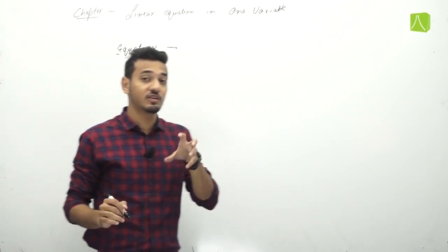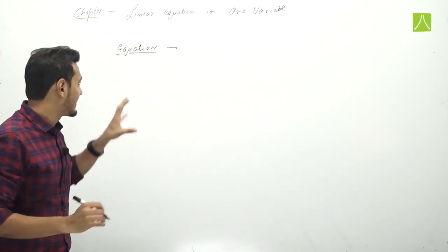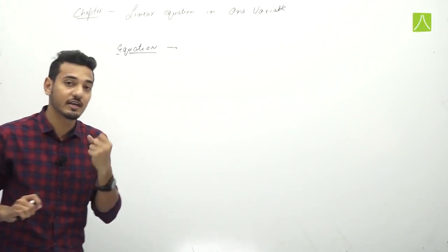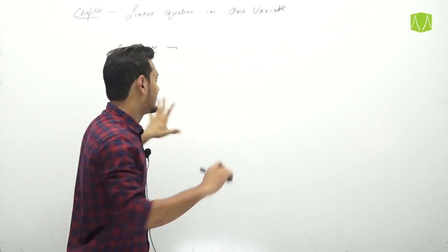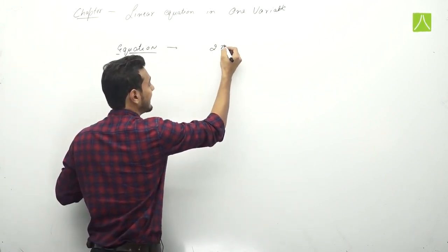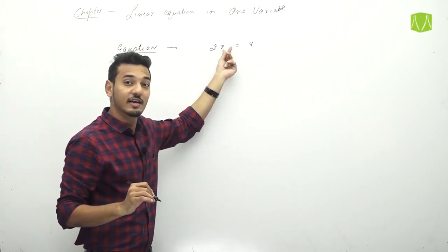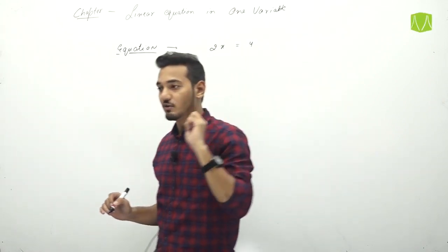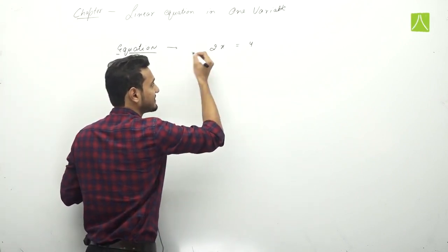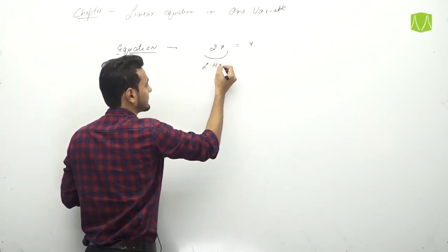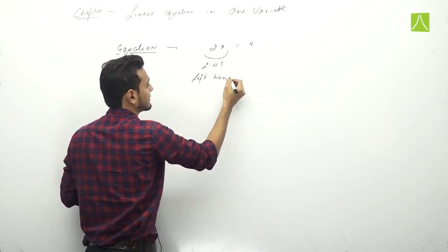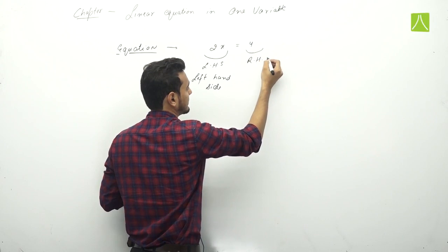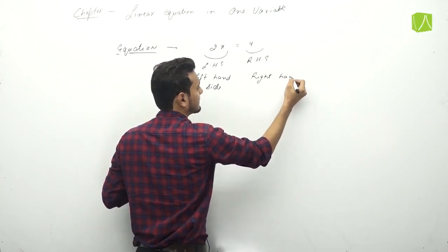What is an equation? An equation is one which has an equals sign. Like 2x equals to 4 — this is an equation. The left-hand side has some values and right-hand side has some values. The left side is LHS (left-hand side) and the right side is RHS (right-hand side).